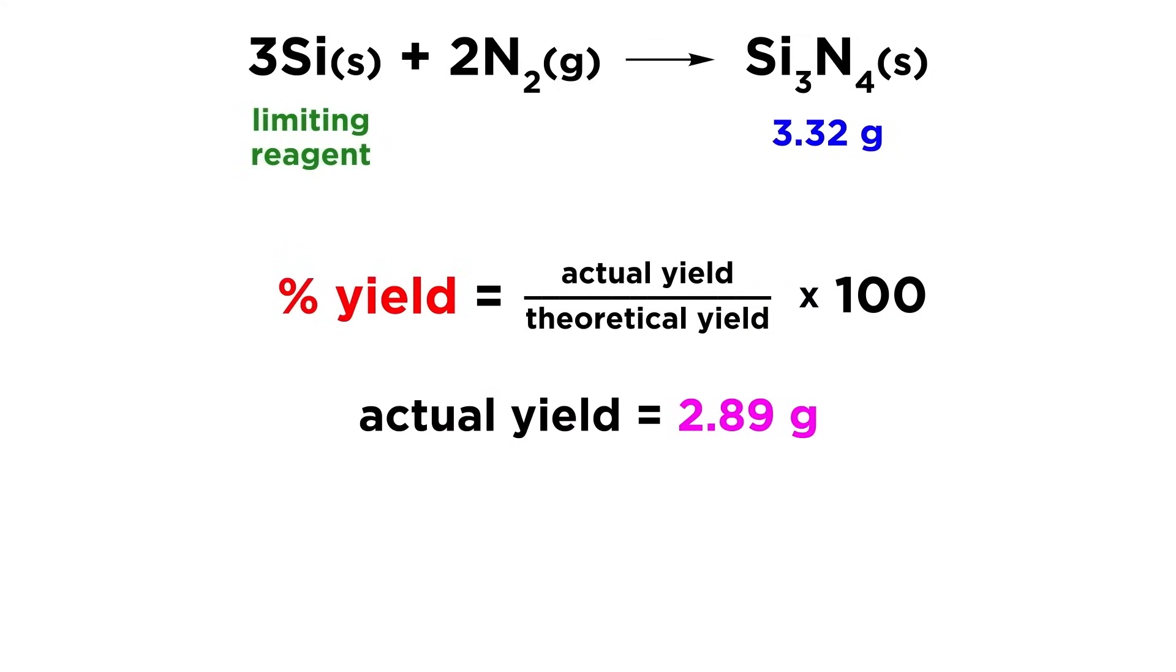Let's say that we perform this reaction, and collect the product, which we weigh out as being 2.89 grams. What will be the percent yield? Well, let's just divide by 3.32 grams, the theoretical yield, and multiply by 100. This gives us an 87% yield.